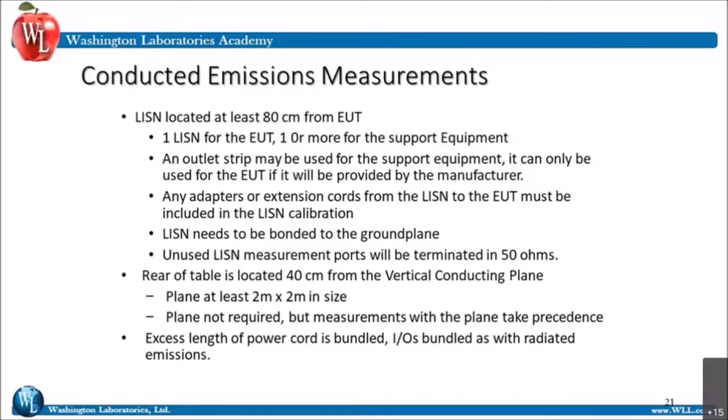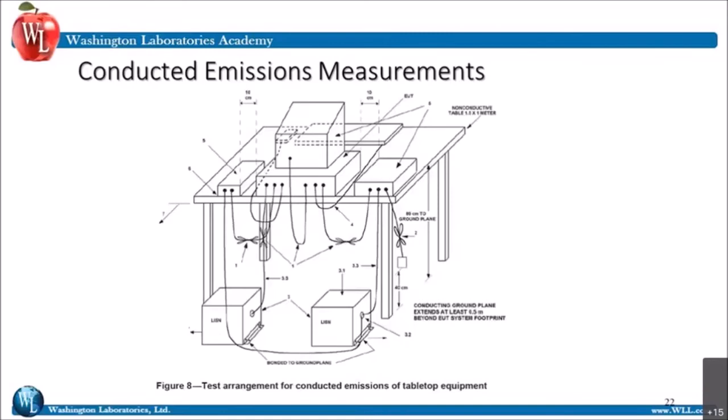An excess length of the power cord is bundled. I/Os are bundled as with radiated emissions, so you do all that bundling to make sure the cables are the right length. The conducted emissions setup shows the LISNs on the ground plane, bonded to the ground plane, and cabling draping over the back less than 40 centimeters to the ground plane, everything 10 centimeters away from each other. We actually used to have a table on wheels that we'd wheel from the radiated site to the conducted site so that we didn't have to change the setup.